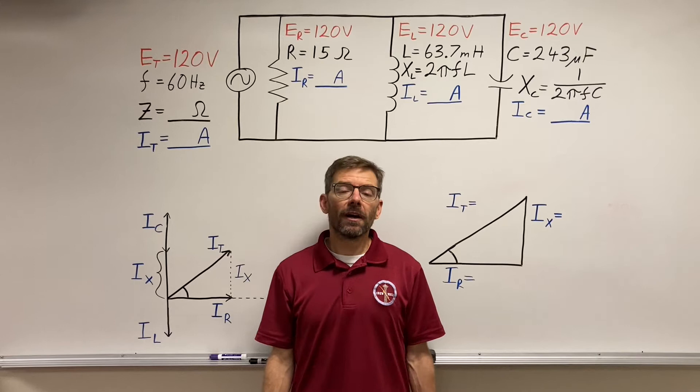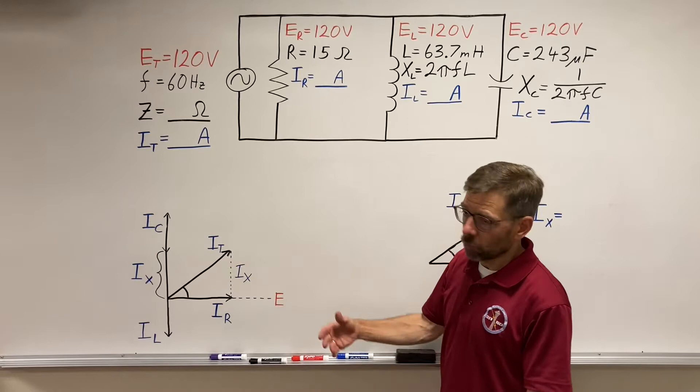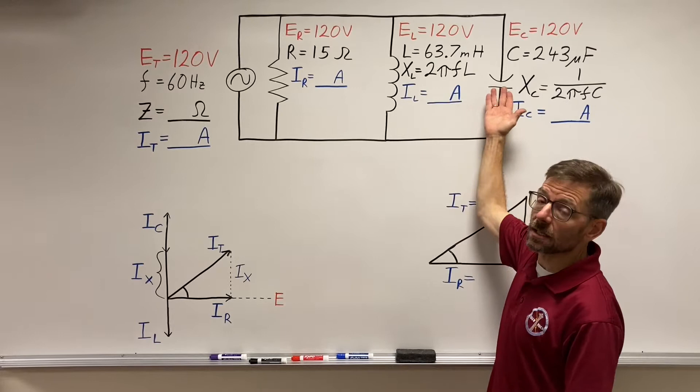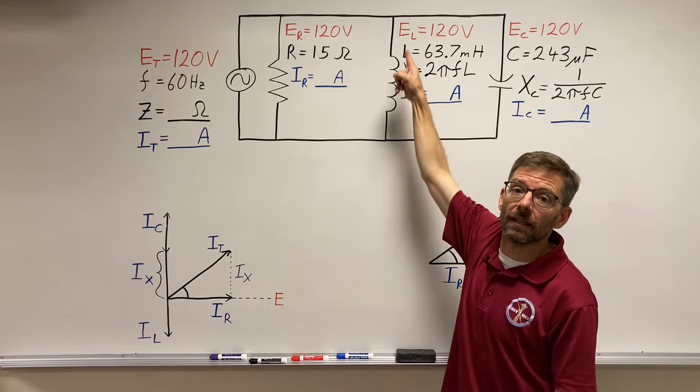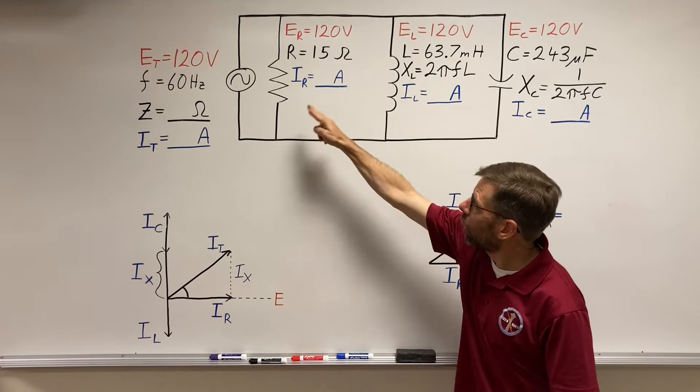Here we find ourselves with a parallel RLC circuit. One branch has resistance, one branch has inductance, one has capacitance. And as with before, we're assuming this is a theoretically pure inductor. We're ignoring the resistance that would be in the coil.